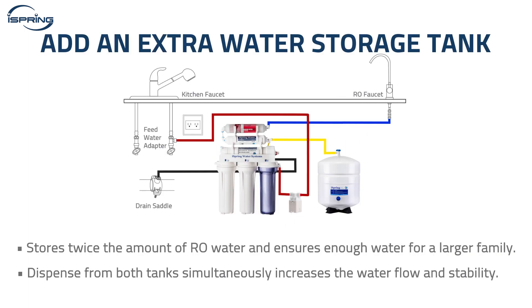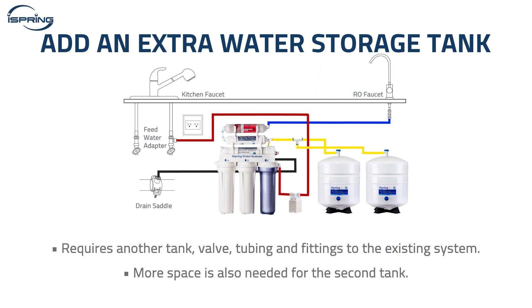Method number three: add an extra water storage tank. Adding an extra water storage tank to the reverse osmosis system is another option to increase the water flow. It stores twice the amount of RO water and ensures enough water for a larger family. RO water will dispense from both tanks simultaneously when the faucet is on, which increases the water flow and stability. This method requires purchasing and installing another tank, tank valve, tubing, and fittings to the existing system. More space is also needed for the second tank.